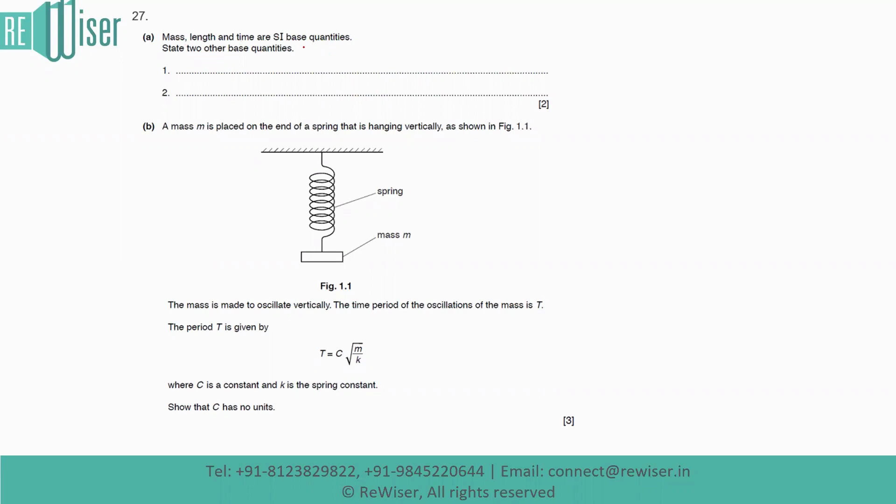So mass is the base quantity which has units of kilogram, length is a base quantity which has units of meter, and time is the base quantity which has units of second. So there are other base quantities which is written as temperature. It's a base quantity with units of Kelvin. And the other base quantity is current, which is the base quantity with units of ampere.